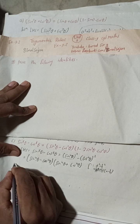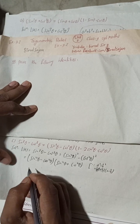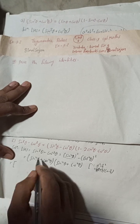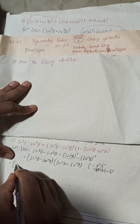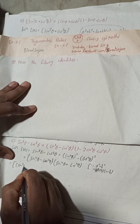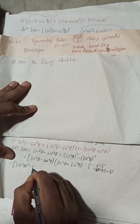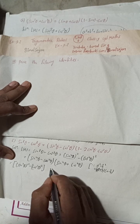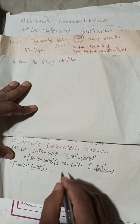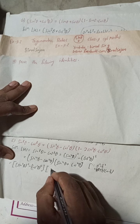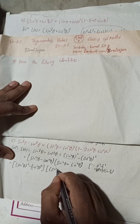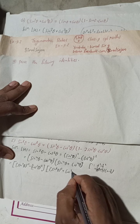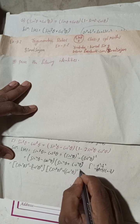Now this can be written again as: (sin²θ)² minus (cos²θ)², all in one bracket, and then (sin²θ)² plus (cos²θ)² in the second bracket.